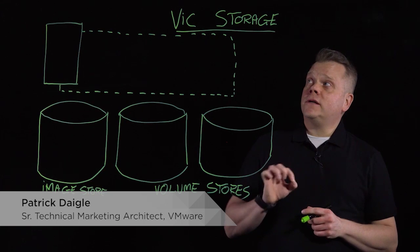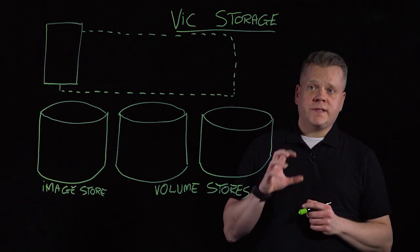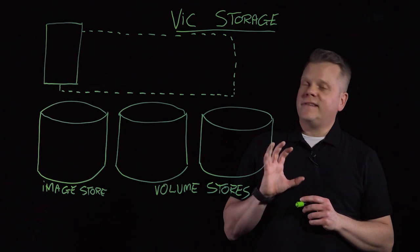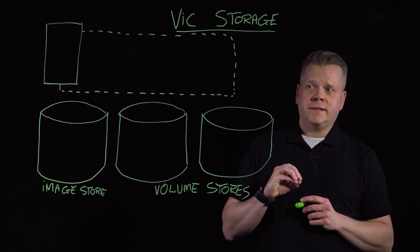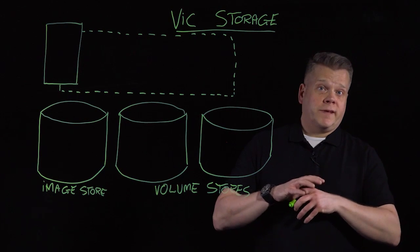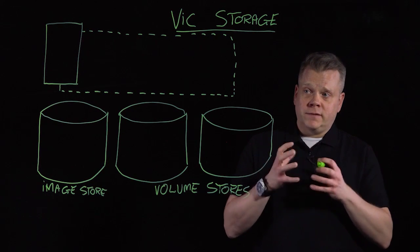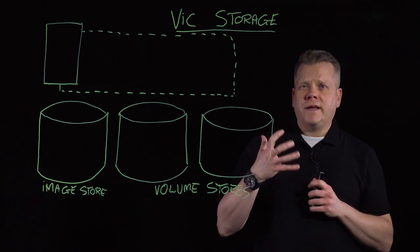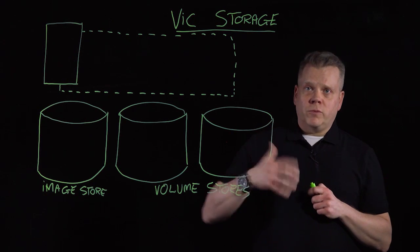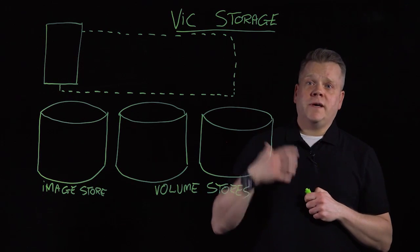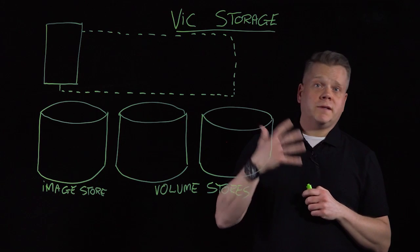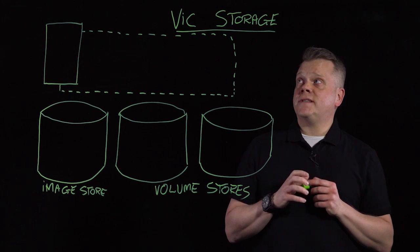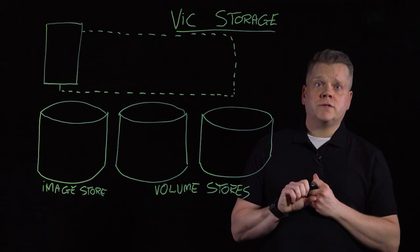Specifically, we're going to look at how VIC helps you address the data persistence problem with running containers. Containers, by definition, are ephemeral and stateless, which means that when a container goes away, all the data that was written to its internal file system also goes away. So we want containers and those images to be immutable — it makes deployment more consistent and predictable. But there are some use cases where containers require a level of data persistence, and that's what we're going to address.